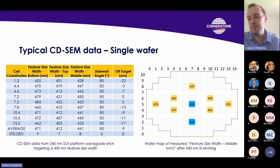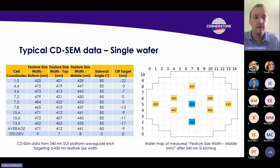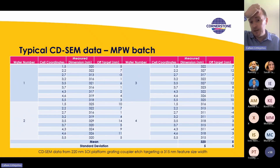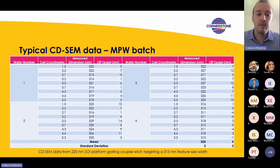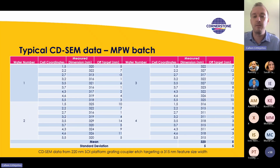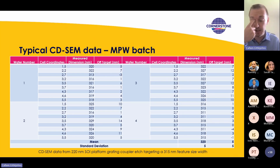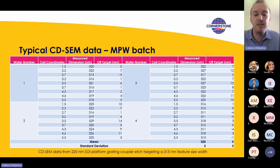You can see a map of what this might look like, with some typical tolerances. This now shows variations across multiple die on multiple wafers. In this case it's for a 220 nanometer SOI platform, and it's the grating coupler edge, so we're targeting a slightly different dimension.